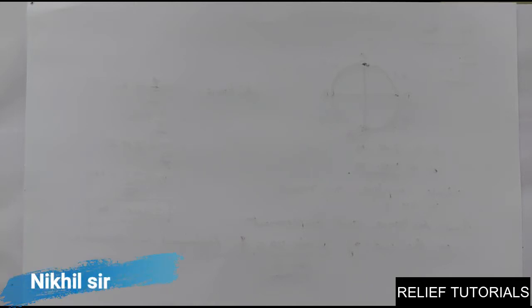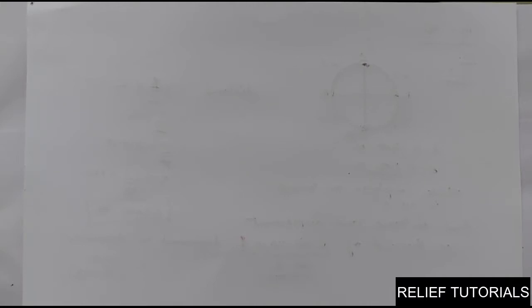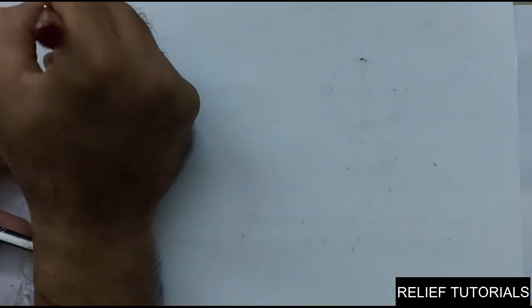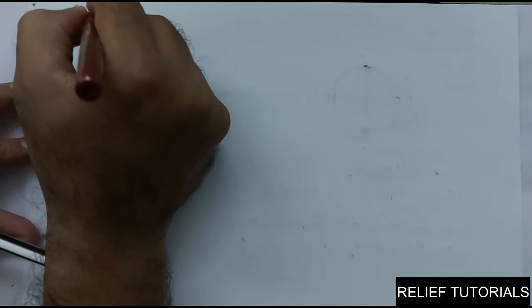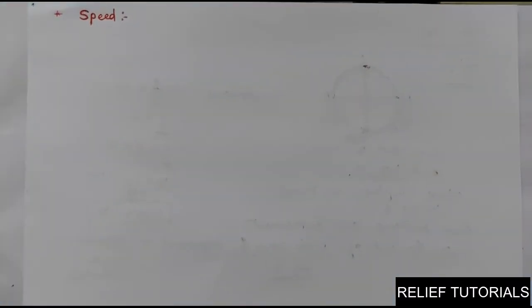Welcome back. In the previous session we discussed many examples regarding distance and displacement. Distance means the length of the path traveled by the moving particle, and displacement means the straight distance between the initial and the final point. Based on this, we have new terms to study — the first one is speed.